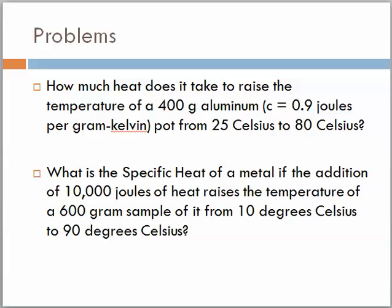The first one says, how much heat does it take to raise the temperature of a 400 gram aluminum pot with a specific heat of 0.9 joules per gram-kelvin from 25 degrees Celsius to 80 degrees Celsius?